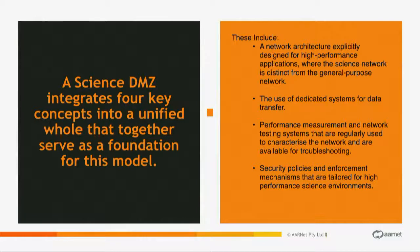It has four key parts. It's an architecture explicitly designed for high throughput and designed for data transfer. Performance measurement and network testing systems — so we know basically how the network performs end-to-end all the time. There's an expectation that we know how things work.